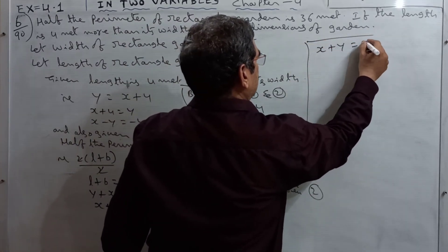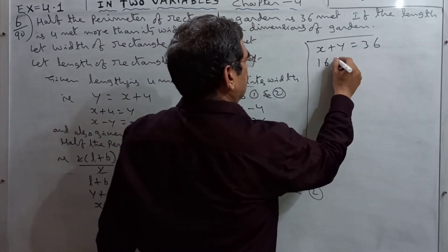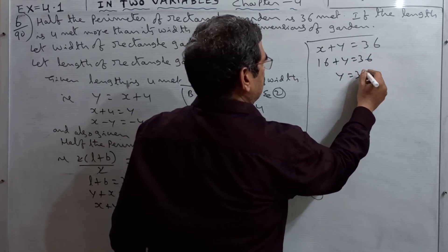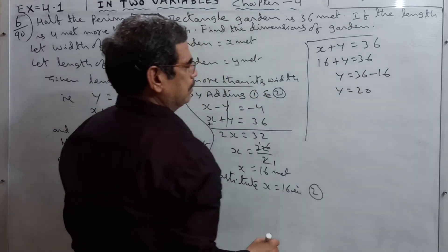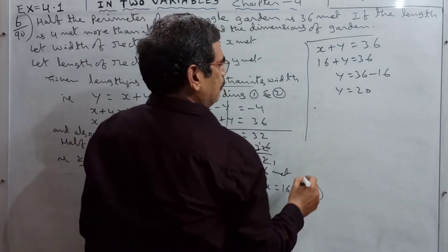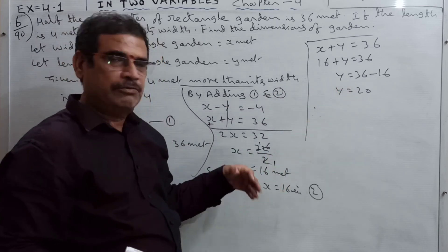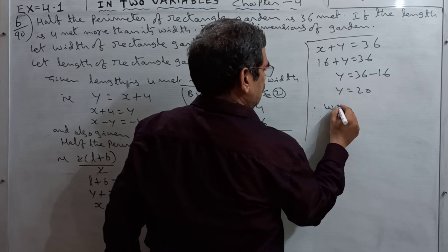x plus y equals 36, so 16 plus y equals 36. y equals 36 minus 16, y equals 20.